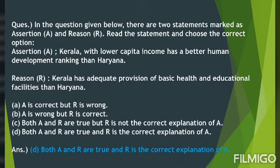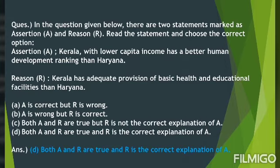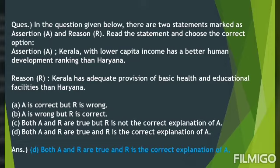Remember, whenever you get assertion-reason type questions, follow two steps: first, check both statements for correctness; second, check whether the reason is the correct explanation of the assertion. Also remember, when writing the answer of MCQs or assertion-reason questions, put the question number on the left side of the margin and write the correct option number on the right side. Then write the entire statement of that correct option — as I have written here, D in brackets followed by the full statement.